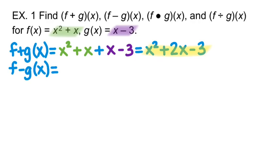Okay, so next is f minus g. We're going to do x squared plus x minus, and I'm going to put x minus 3 in parentheses this time. When you're doing subtraction, you want to make sure that everything in that second function gets the subtraction symbol. So we're going to distribute the negative.